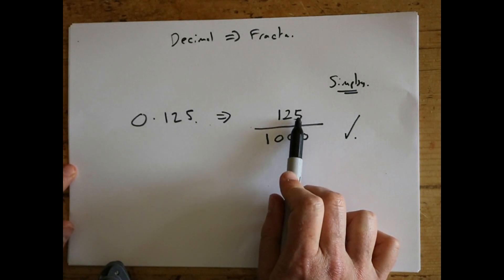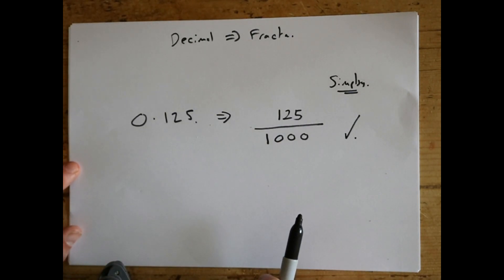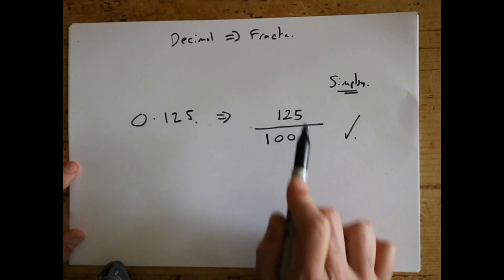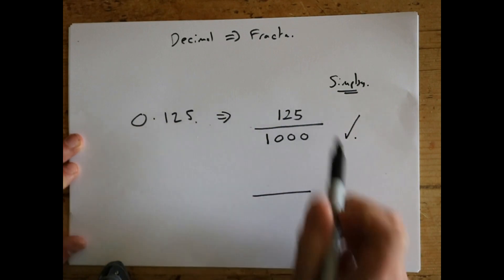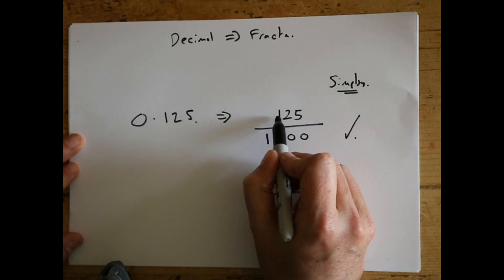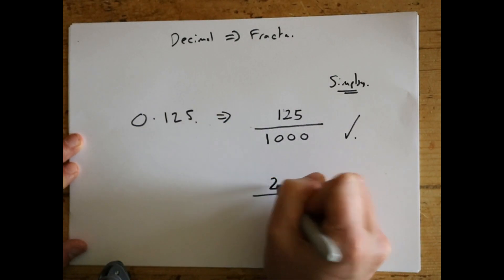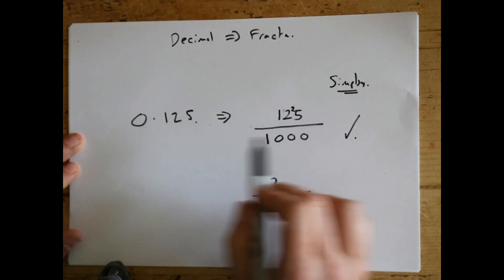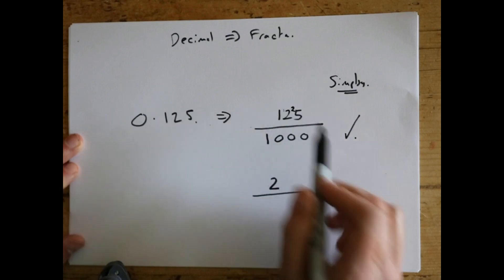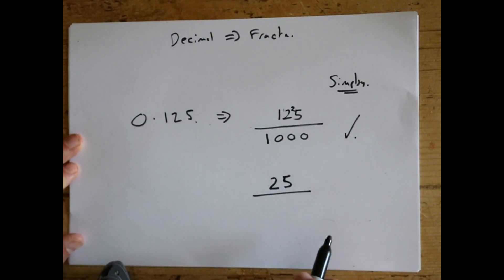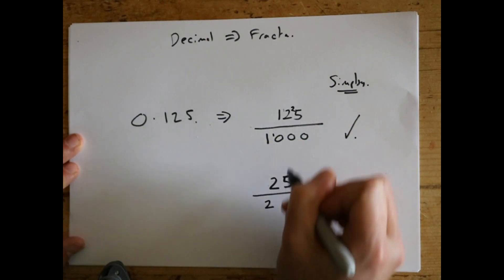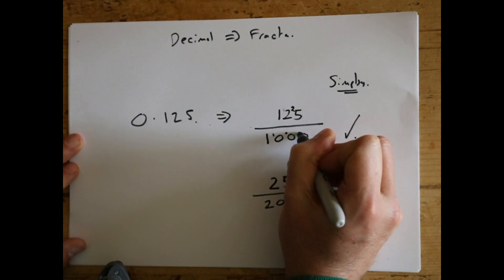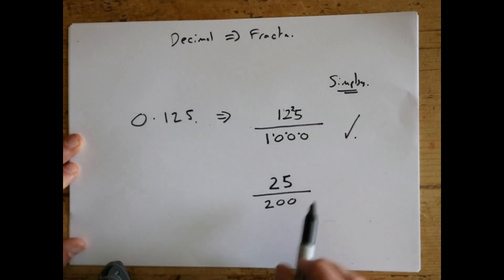125 over a thousand is a good answer, but what we had before was a lot easier to write down, so we need to simplify. This ends in a five and the bottom ends in a zero, so the five times table is useful. Divide the top by five and the bottom by five. Five into 125: five into one is zero, five into twelve goes twice with two left over, five into twenty-five is exactly five — so 125 ÷ 5 = 25. For the bottom: five into one doesn't go, five into ten goes two, five into zero goes zero, five into zero goes zero — so 1000 ÷ 5 = 200.